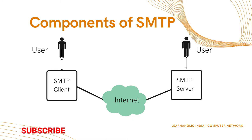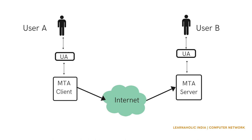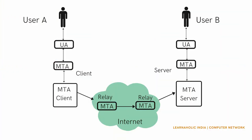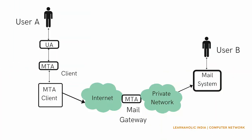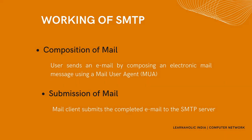The SMTP client and SMTP server are broken into two components: the User Agent (UA) and the Mail Transfer Agent (MTA). The user agent prepares the message, creates the envelope, and puts the message in the envelope. The mail transfer agent transfers this mail across the internet. SMTP allows a more complex system by adding a relaying system - instead of just one MTA at the sending side and one at the receiving side, more MTAs can be added acting as either a client or server to relay the email. The relaying system can also be used without TCP/IP protocol by using a mail gateway, which is a relay MTA used to receive an email.